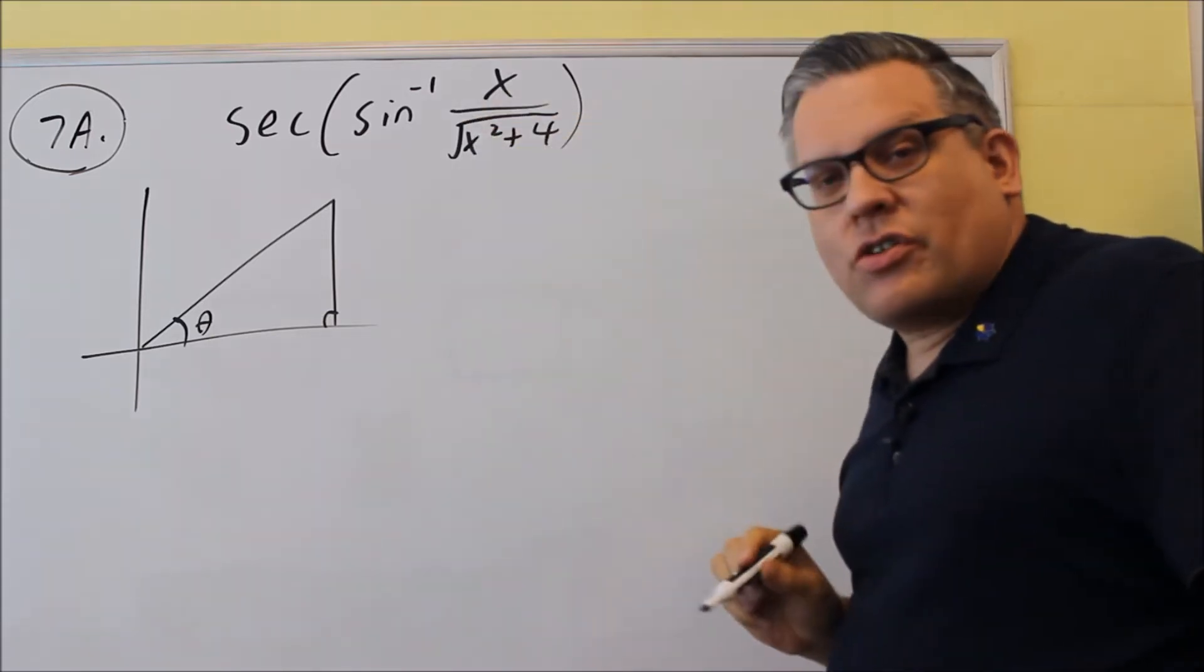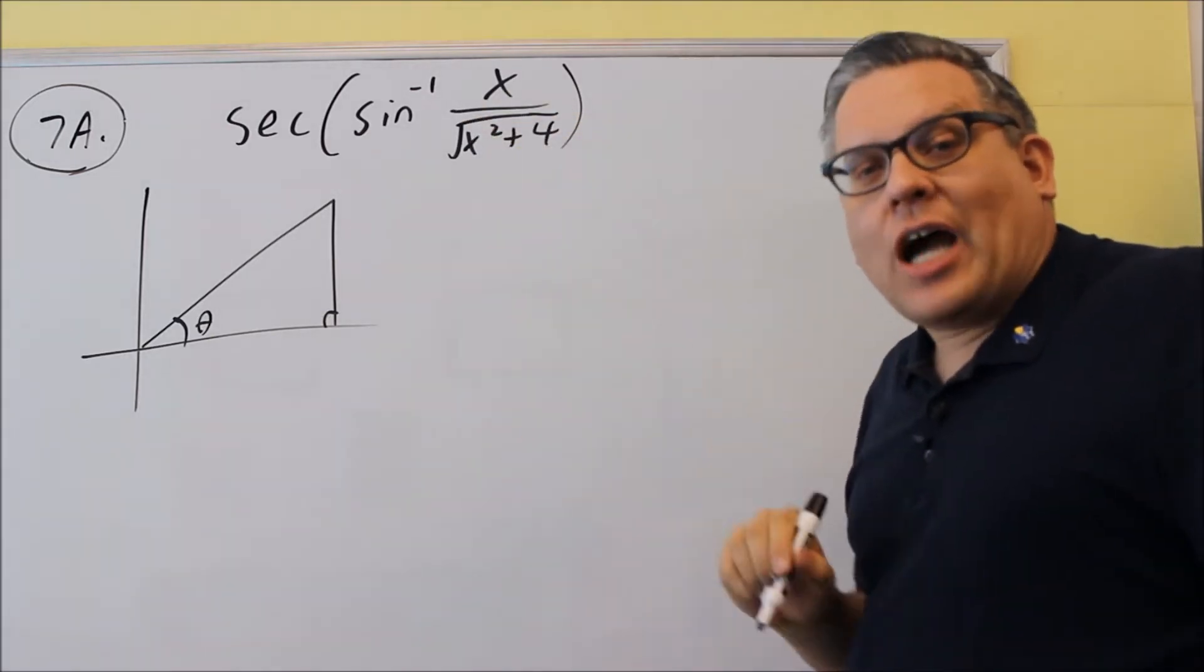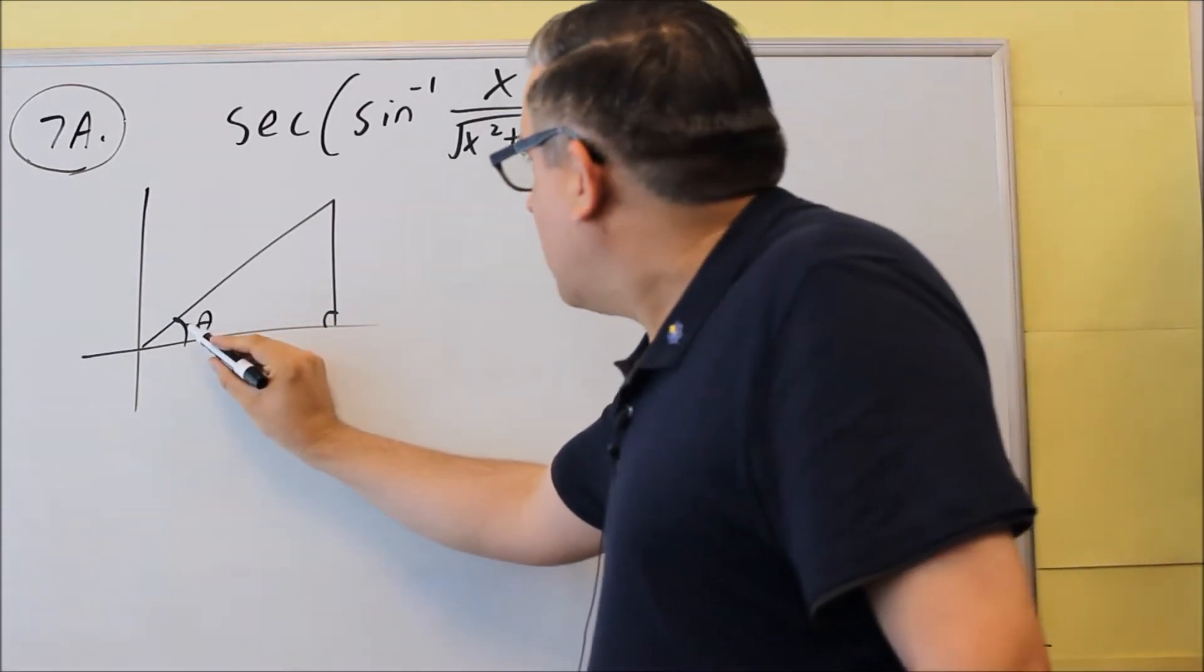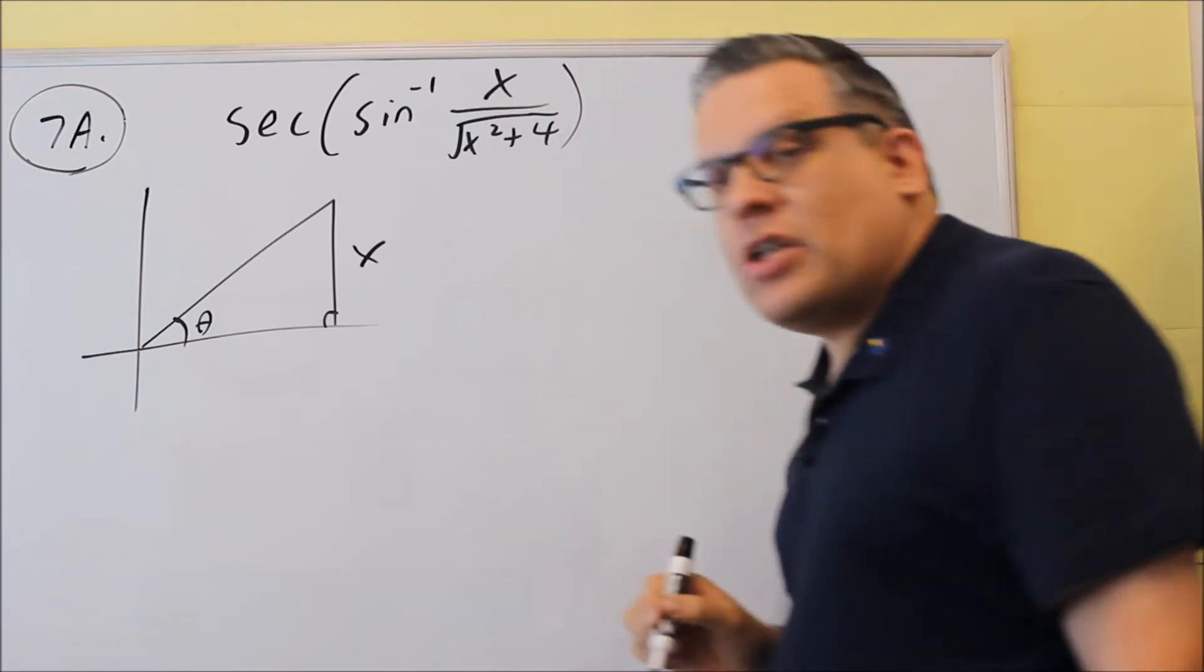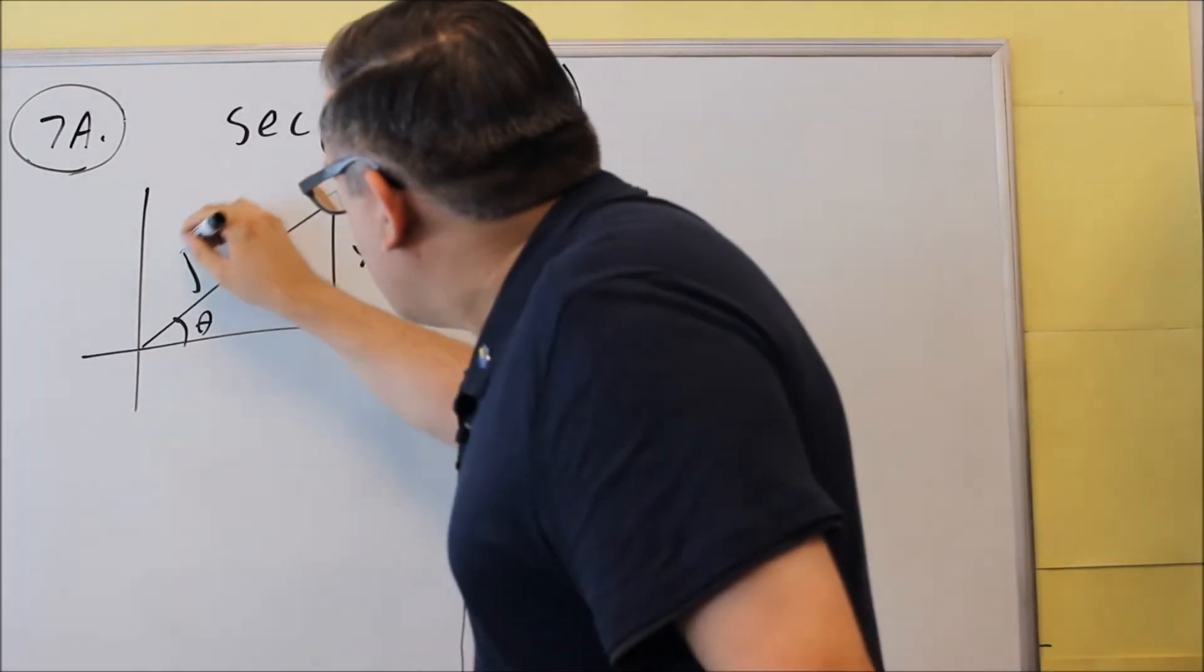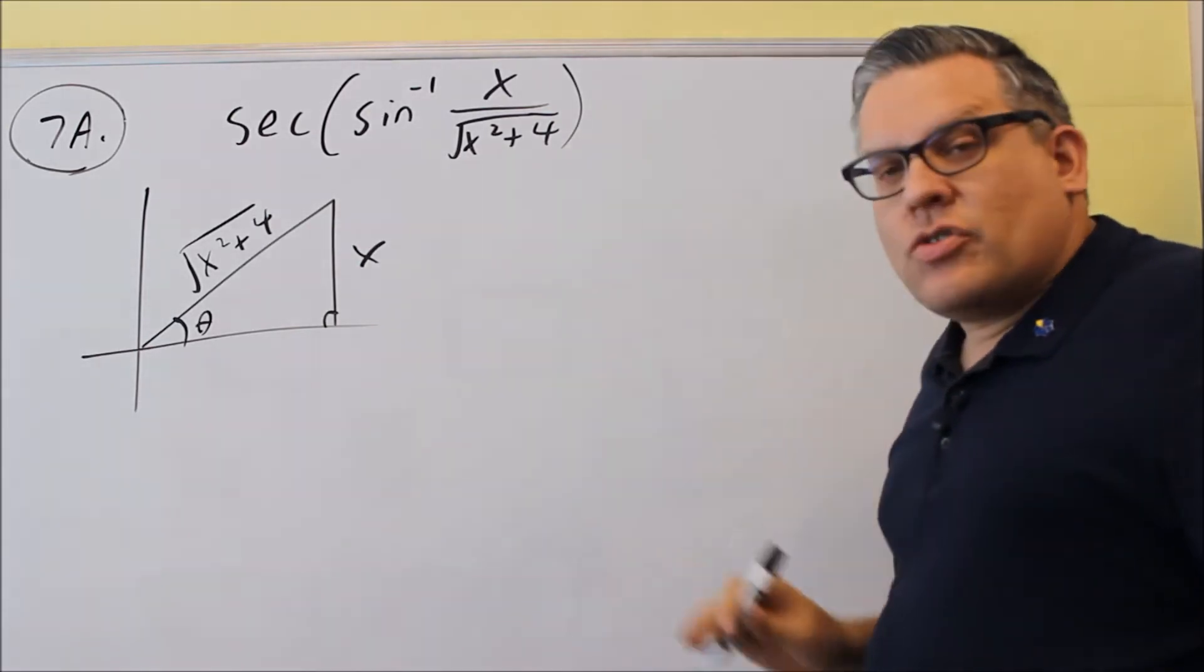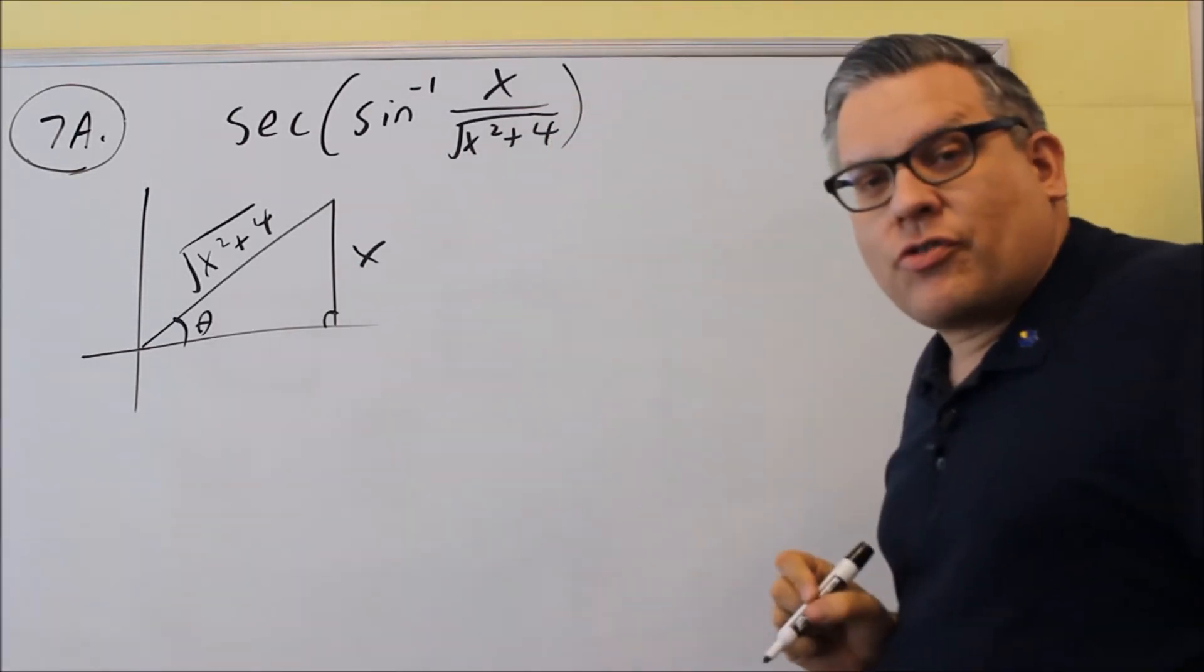First, now the definition for sine is opposite over hypotenuse, and it's going to be opposite this angle right here. So opposite means that this side is going to be x. Hypotenuse is going to be x squared plus 4. So now I have the two sides labeled again using the definition for sine.